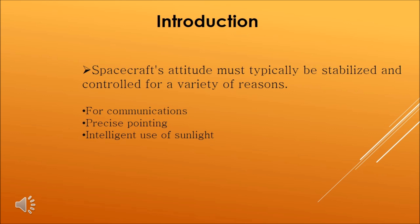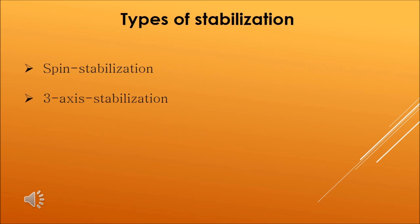There are two basic types of stabilization and attitude control: first is spin stabilization, and second is three-axis stabilization.